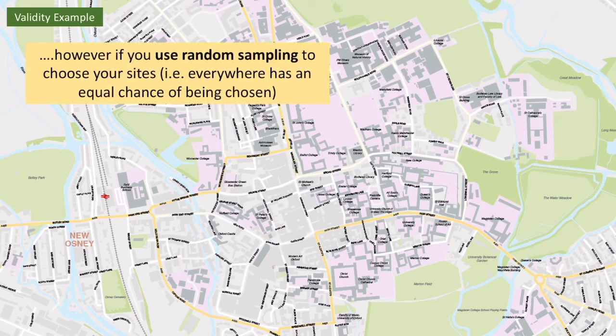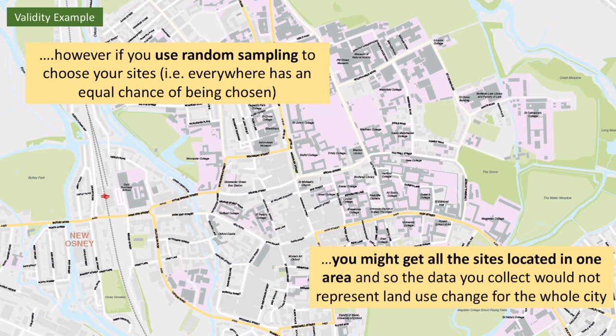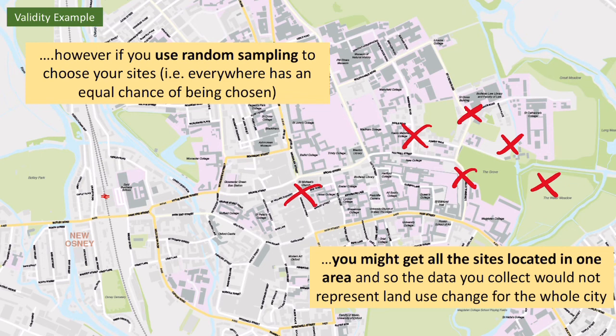However, I might decide to use an inappropriate sampling strategy, such as random sampling — choosing sites randomly across the whole city so that everywhere has an equal chance of being chosen, using a grid and random number generator. This could produce invalid data because in that random selection, all of the sites might end up located in one area. If all chosen sites were in the central business district, the results would be unrepresentative of land use change for the whole city, making the results not valid.